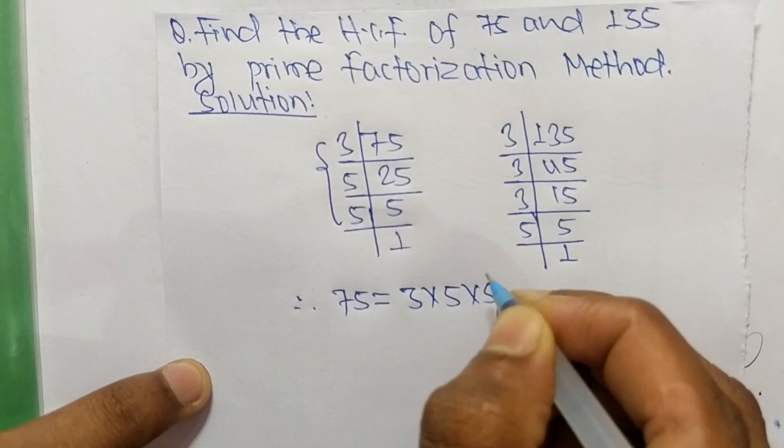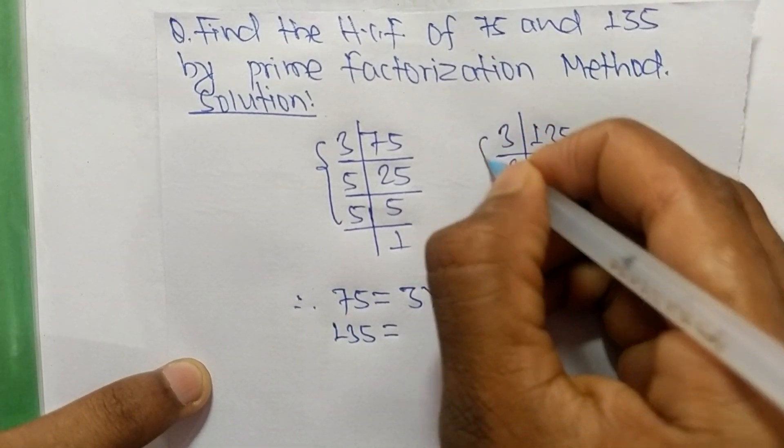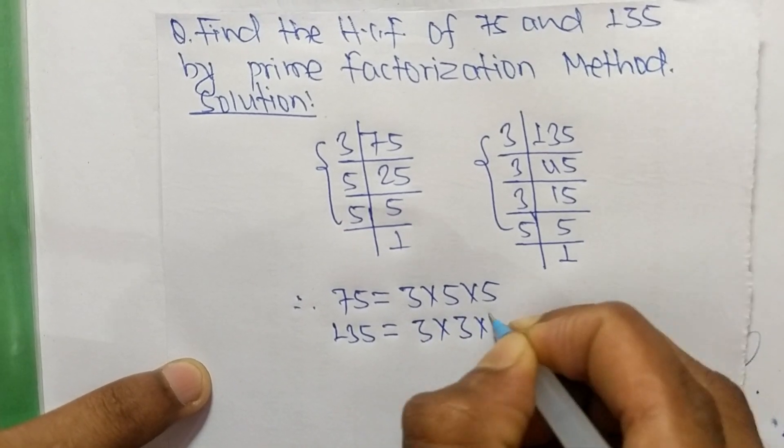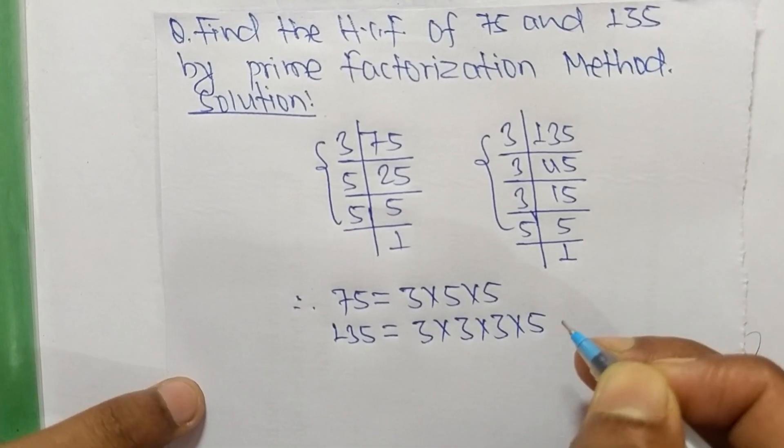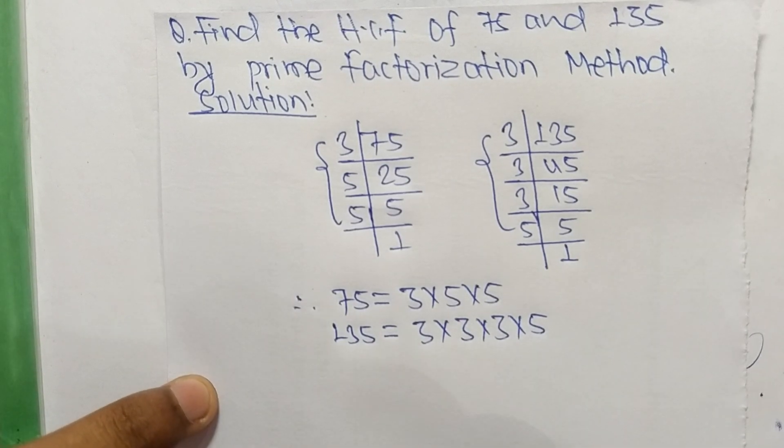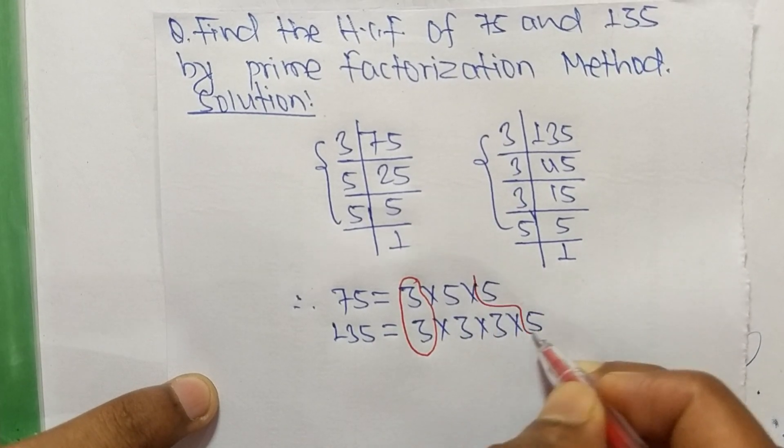135 equals 3 times 3 times 3 times 5. Now we select the common factors in these prime factorizations. The common factors are 3 and 5.